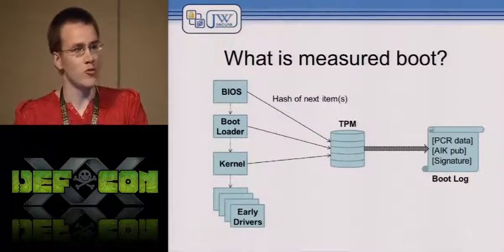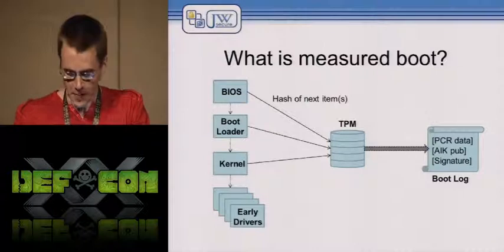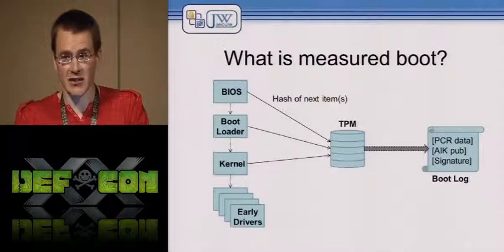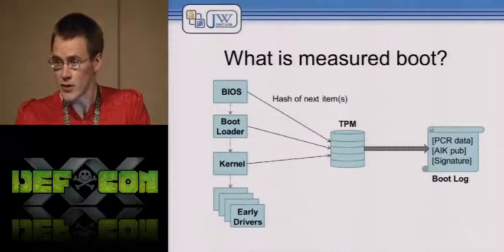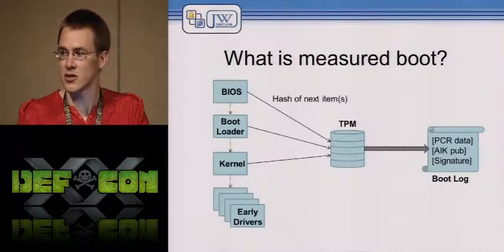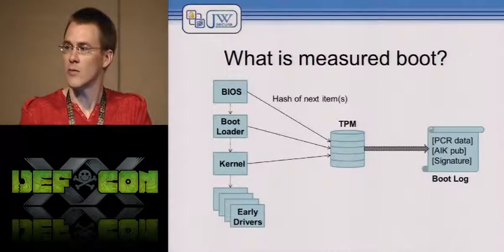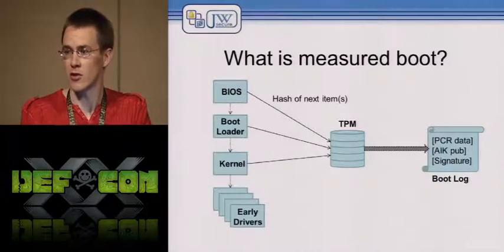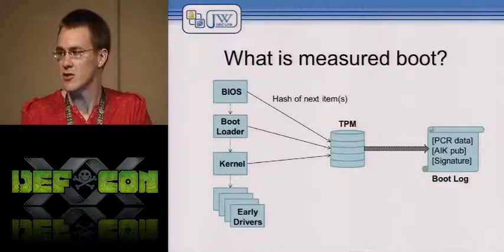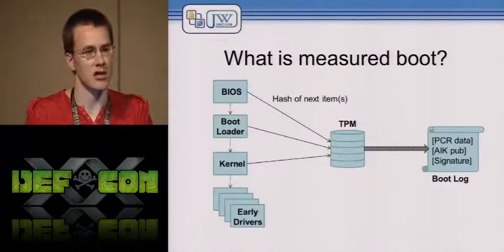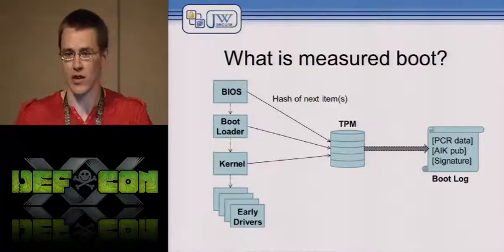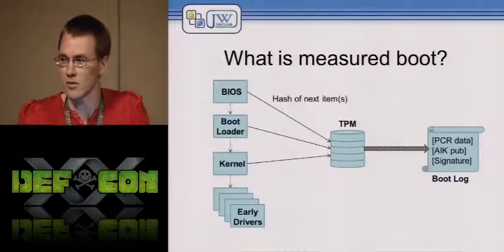After boot, a boot log can be retrieved from the TPM. The log includes the boot image hashes, and it includes code signing information — so you don't have to just keep a whitelist of hashes. You can also track certificate chains. For example, you can decide you trust the Microsoft certificate chain, you trust the OEM certificate chains for the machines you use — HP, Intel, etc. That's at least a smaller list than the hash of every possible early boot driver, of which there are probably going to be thousands.